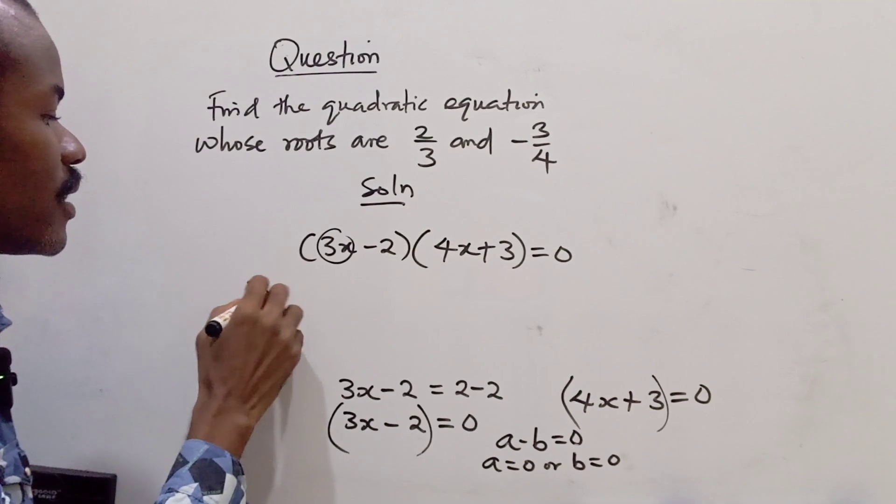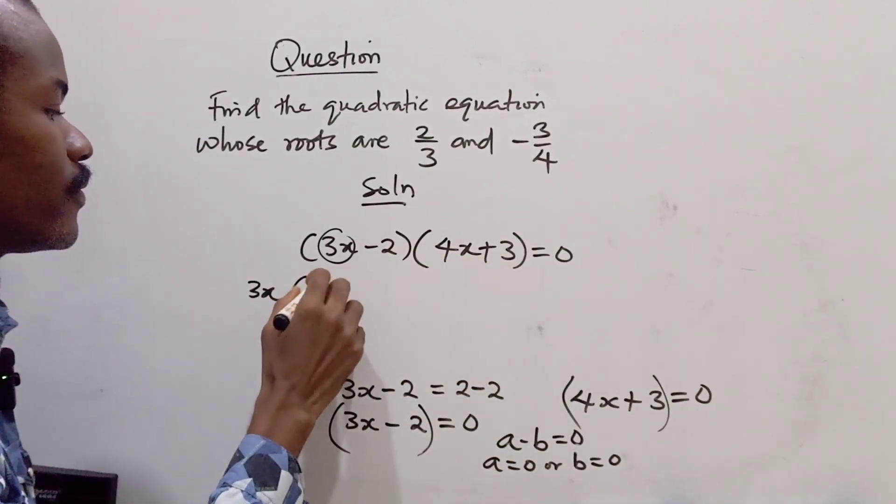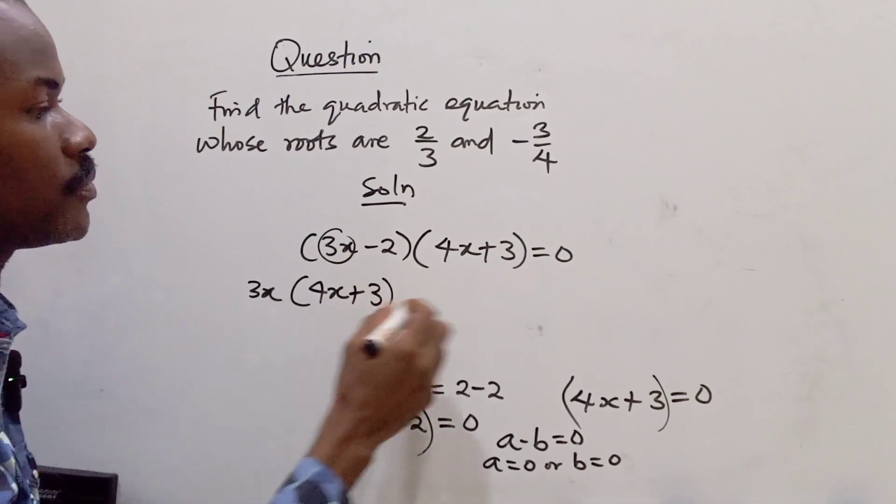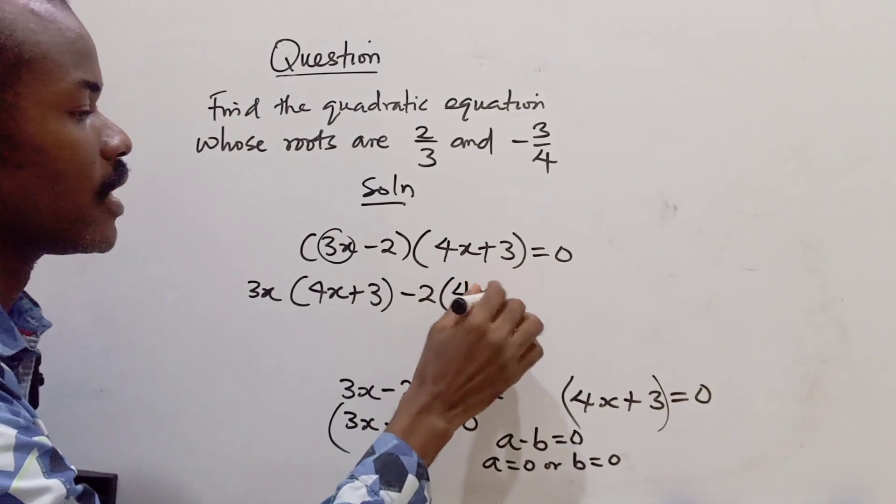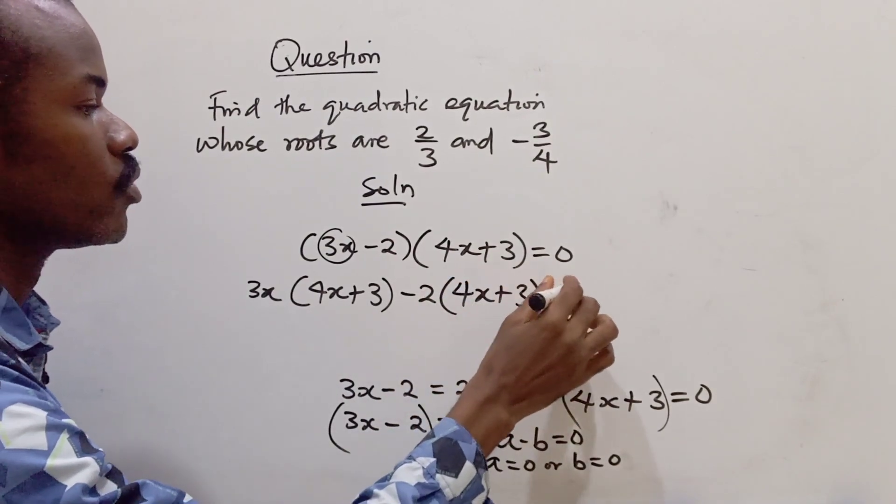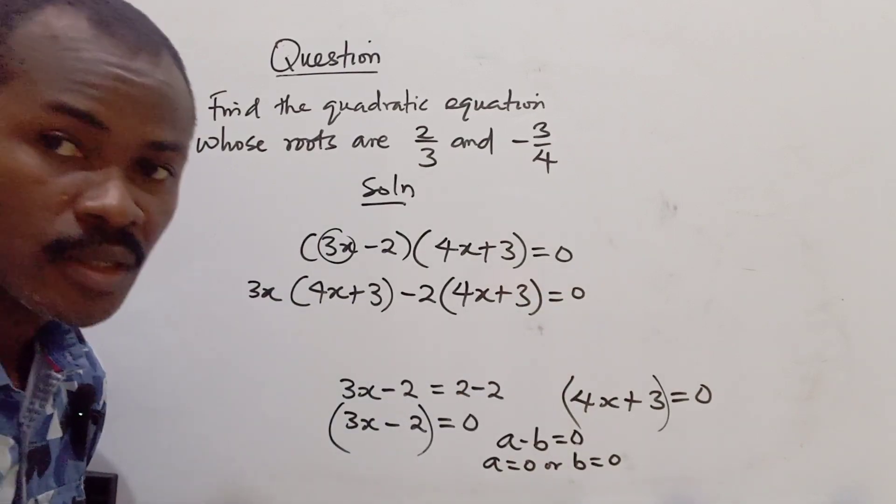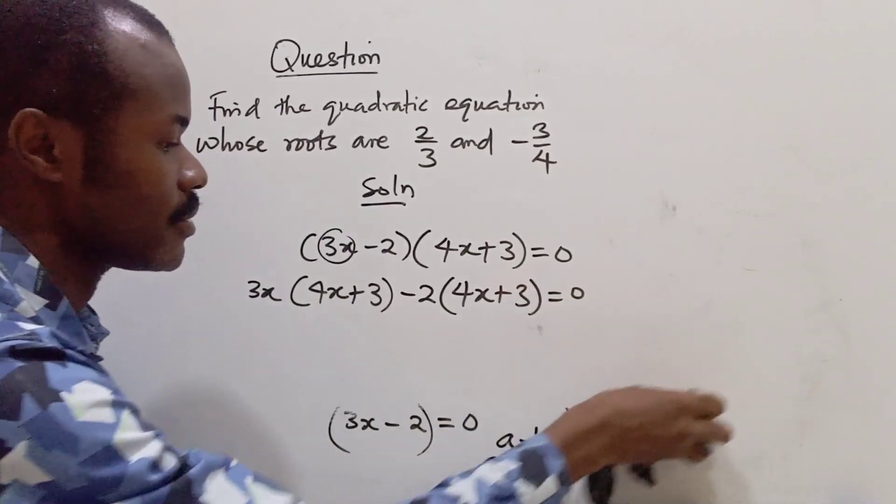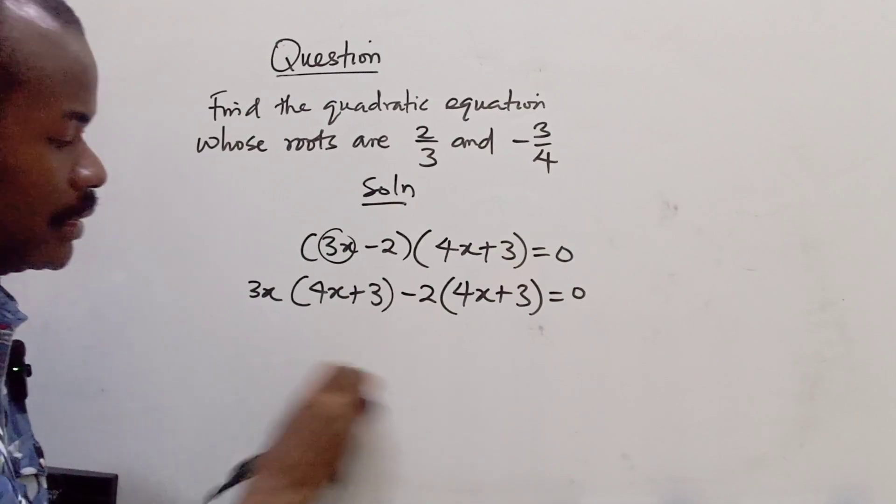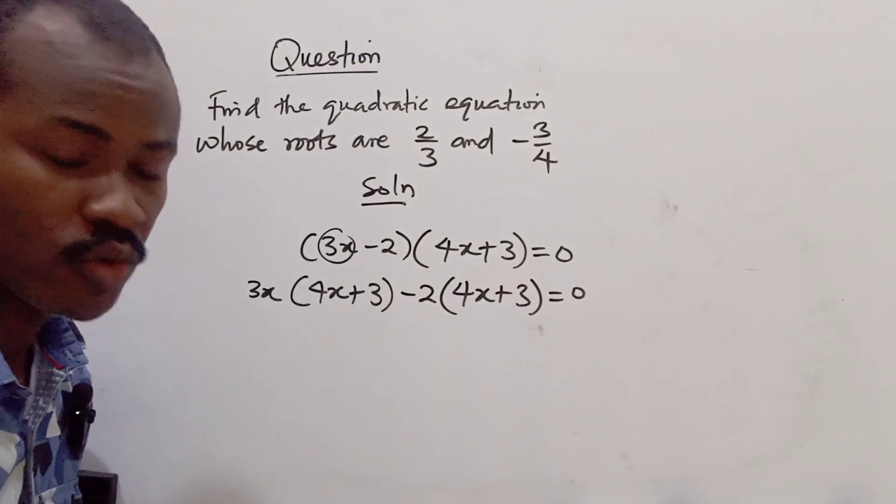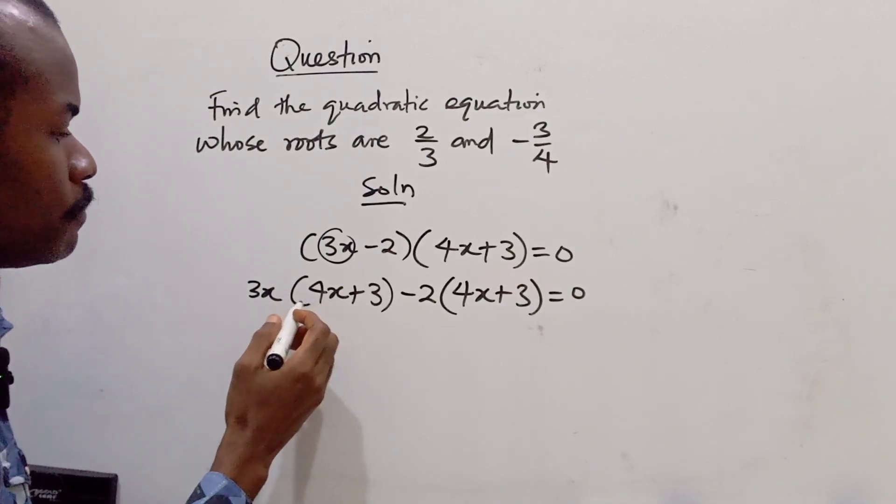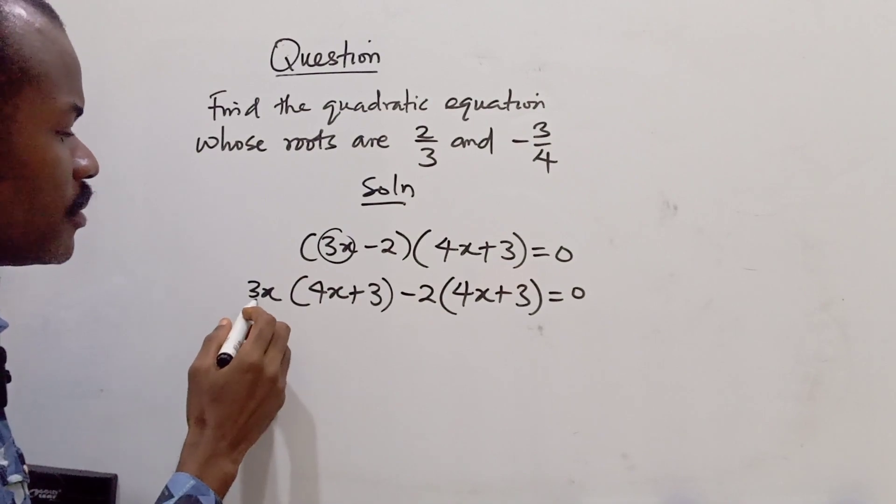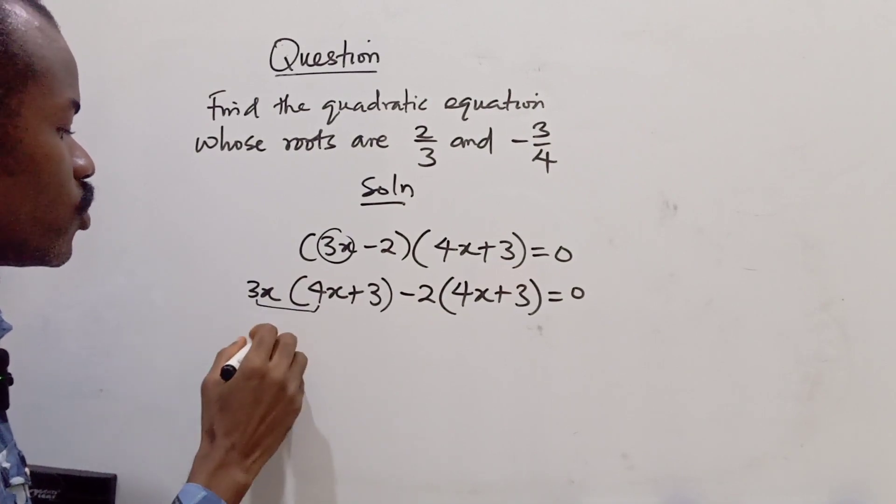So this 3x is going to multiply (4x + 3), and -2 is also going to multiply (4x + 3) equals 0. Once we open the brackets, we are done with developing the quadratic equation. Let's quickly open the brackets. We have 3 times 4 is 12, x times x is x squared.